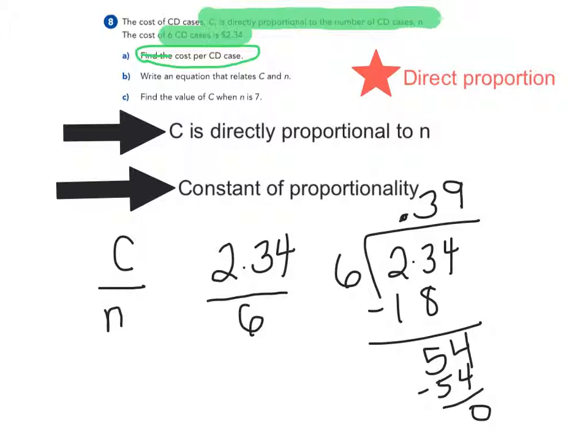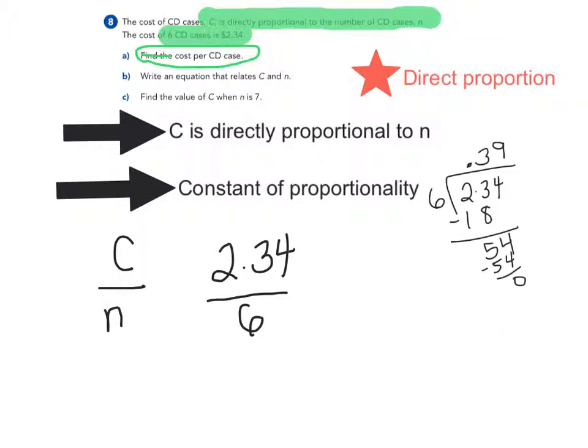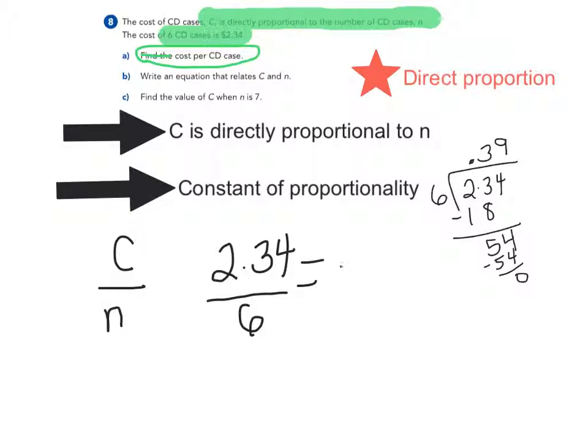What that means is that for every one CD case, the cost is $0.39. So my constant of proportionality is $0.39.